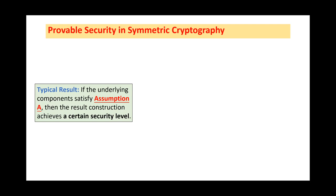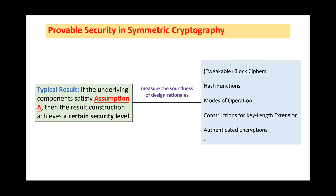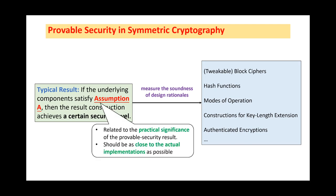If the underlying components satisfy assumption A, then the result construction achieves a certain security level. Here, the measure of security often depends on the model we consider. This type of results can be used to measure the soundness of design rationales for different objects, such as block ciphers, hash functions, and so on. First of all, we can note that the assumption A in the result is closely related to the practical significance. As a result, we wish that the assumption can be as close to the actual implementations as possible.